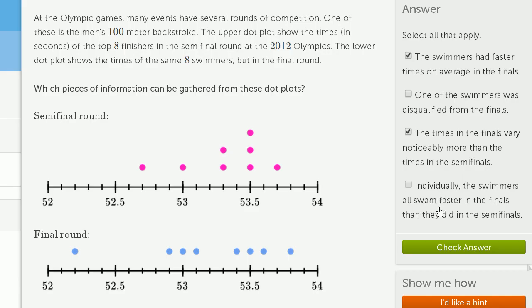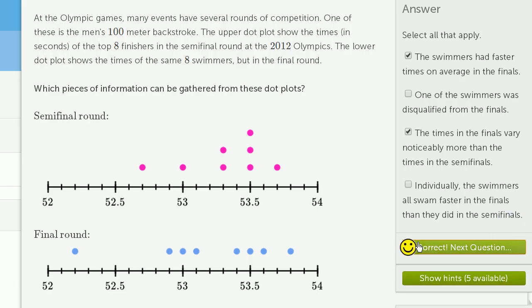Individually, the swimmers all swam faster in the finals than they did in the semifinals. Well, that's not true. Whoever this was, they clearly were one of these data points up here. This data point took more time than all of these data points. So this represents someone who took more time in the finals than they did in the semifinals. And we got it right.